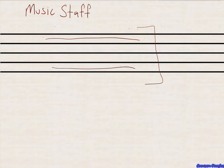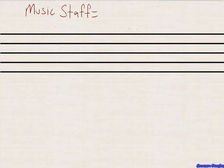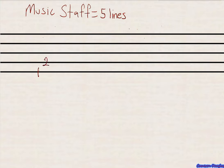The music staff has a set of five horizontal lines. The music staff consists of five horizontal lines. What's important to note is that the first line of the staff starts at the bottom — do not start from the top. Always start from the bottom. So the first line starts right here, this is line number one, then you continue: line number two, three, four, and five.